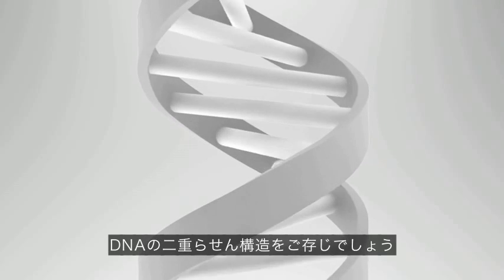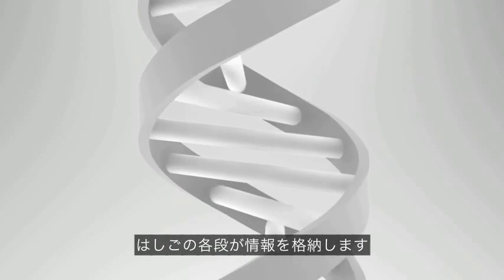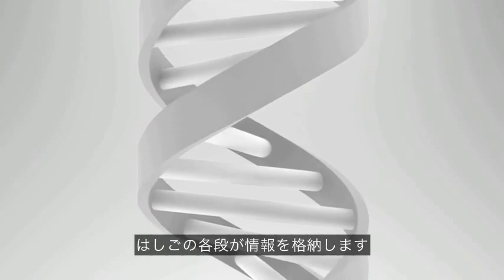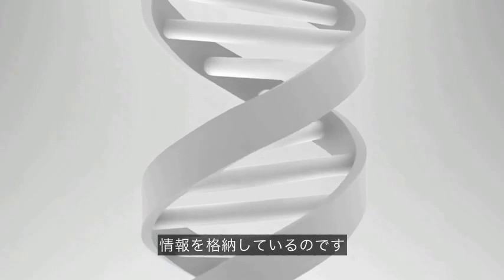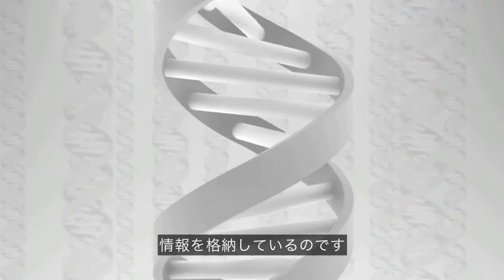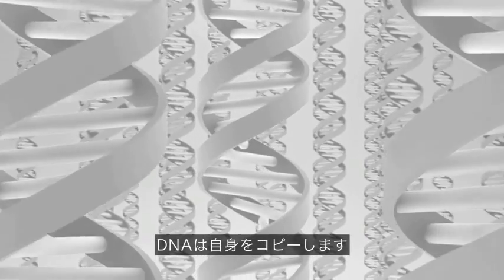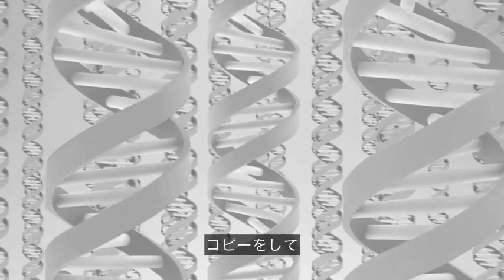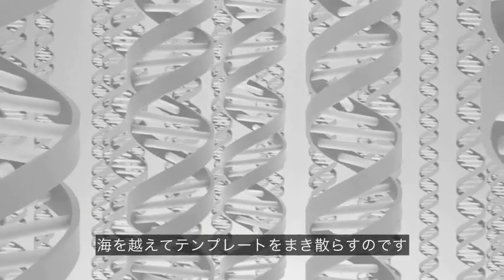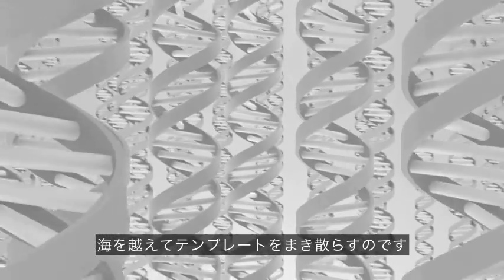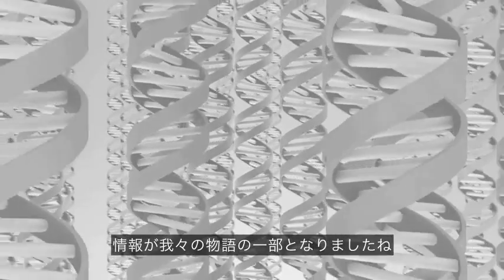You'll be familiar with the double helix of DNA. Each rung contains information, so DNA contains information about how to make living organisms. DNA also copies itself, scattering the templates through the ocean, so the information spreads.